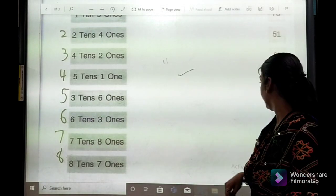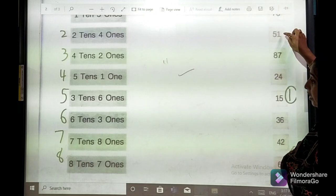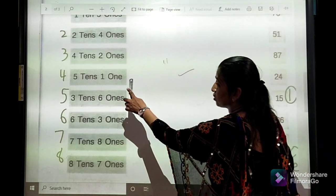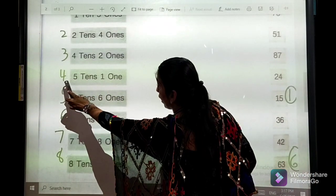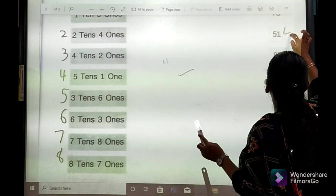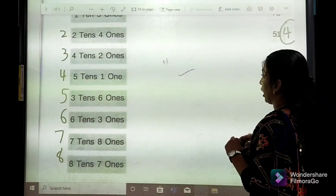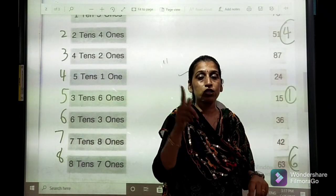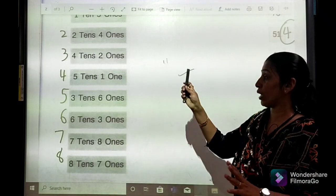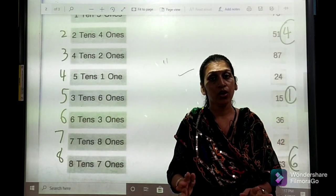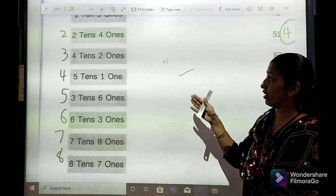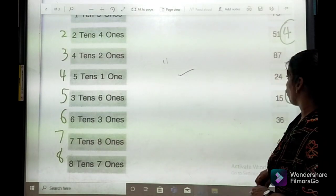Then one more example here comes 5 tens 1 one. 5 tens means 50 and plus 1 means 51. Where is 51? Here it is. So 5 tens 1 one, number 4. You have to label it. So be ready with that. It is a very easy one.